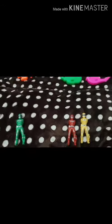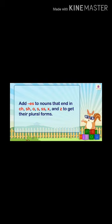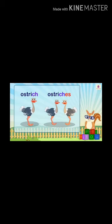I am going to tell you the rules of these nouns, so please listen carefully. The first rule is: we have to add E-S at the end of a noun that ends in CH, SH, SS, X, or Z to get its plural form. For example, 'ostrich' ends in CH, so we add ES — 'ostriches'.